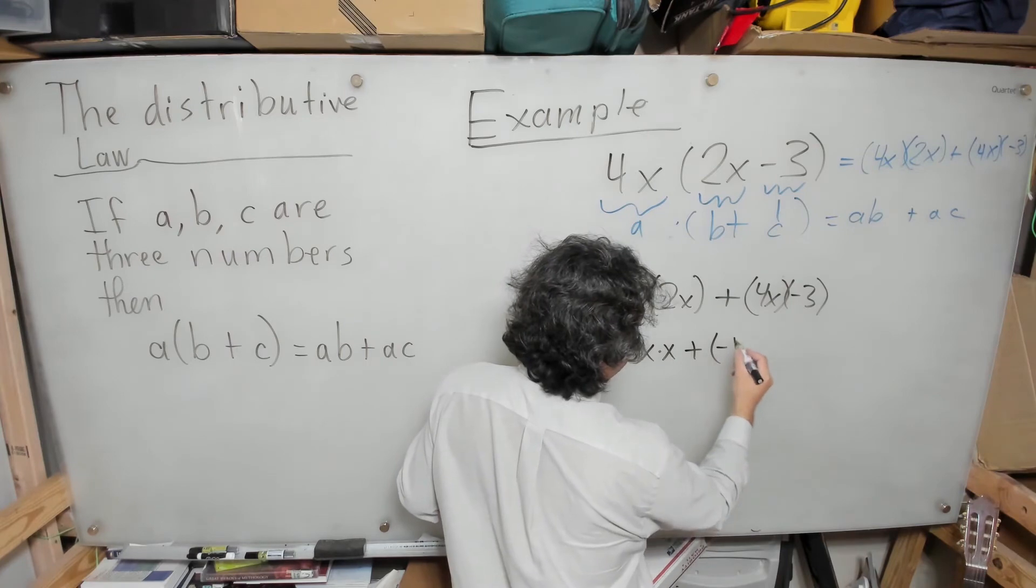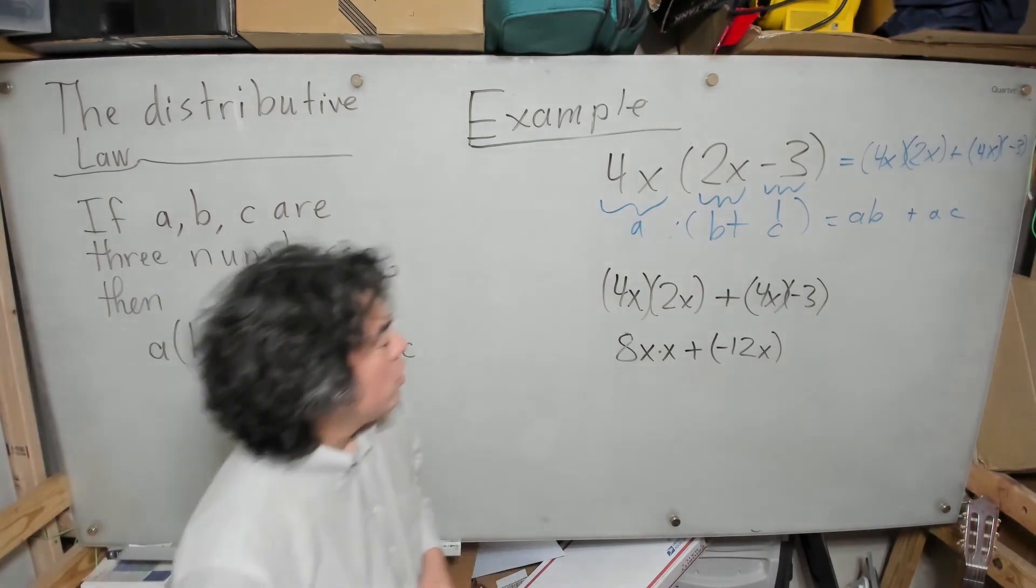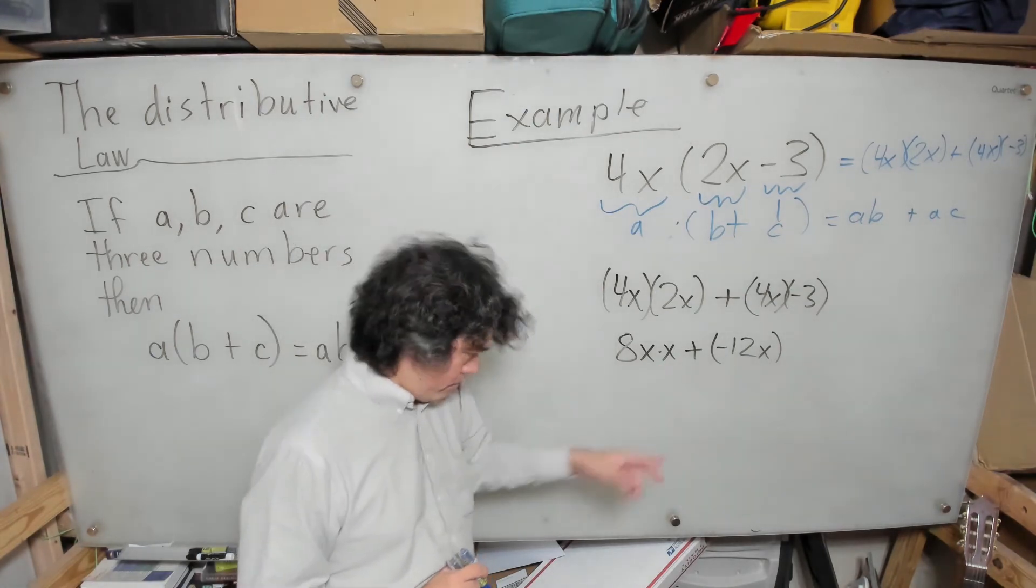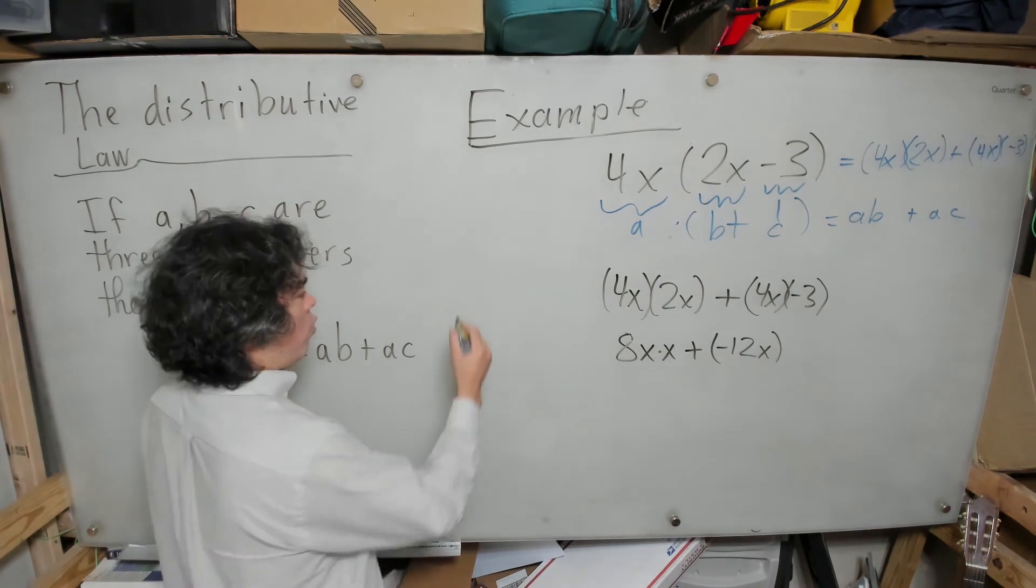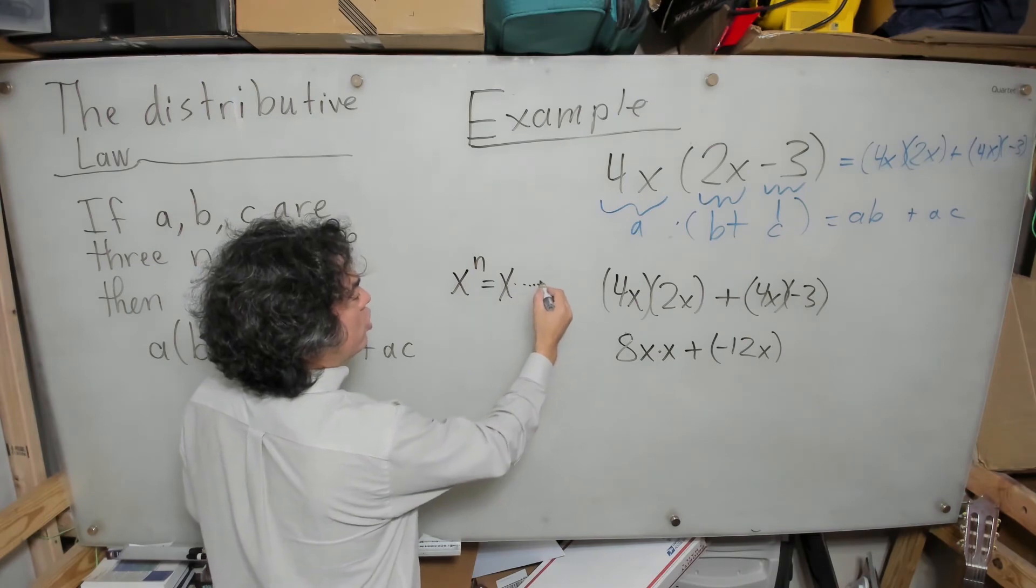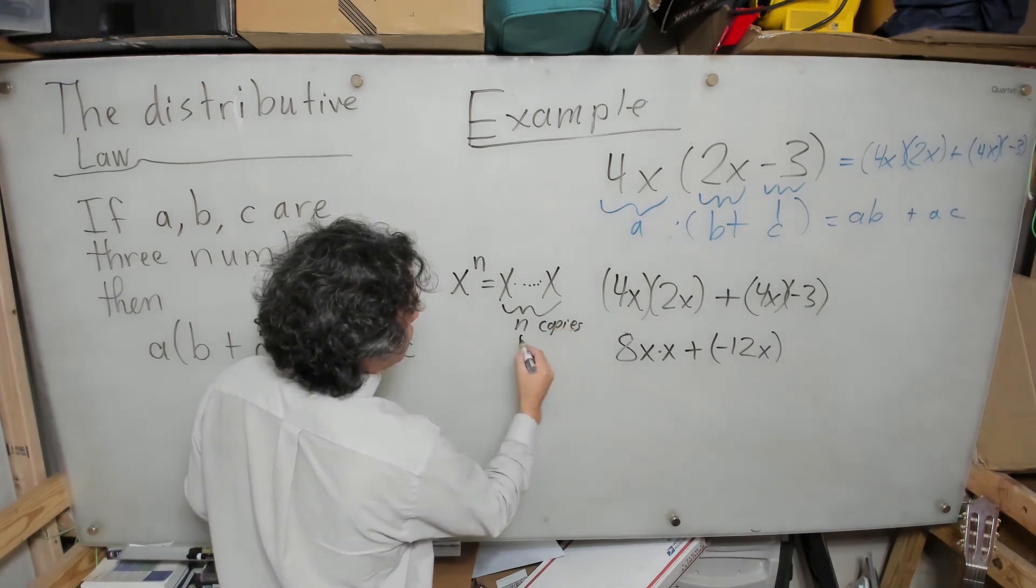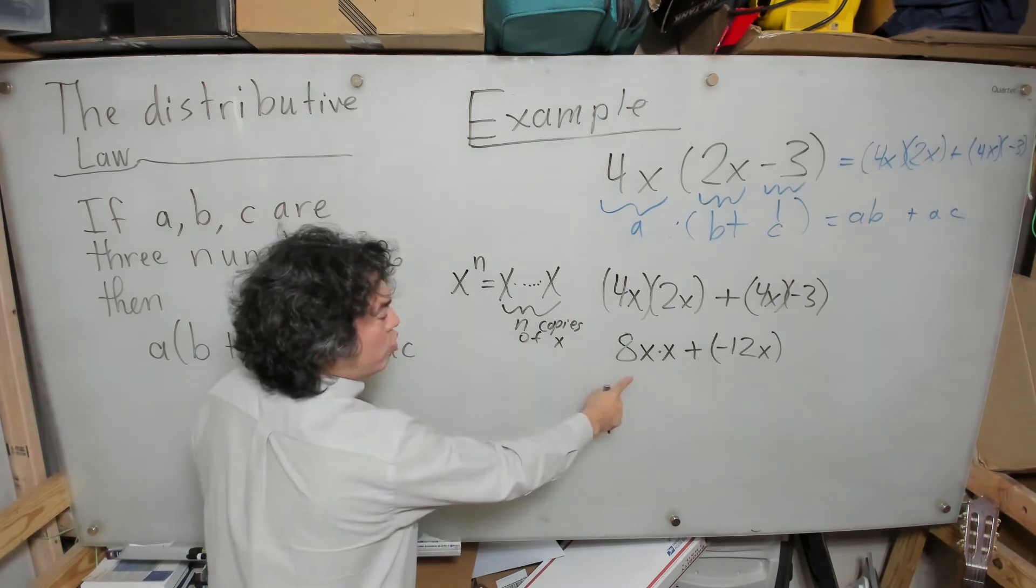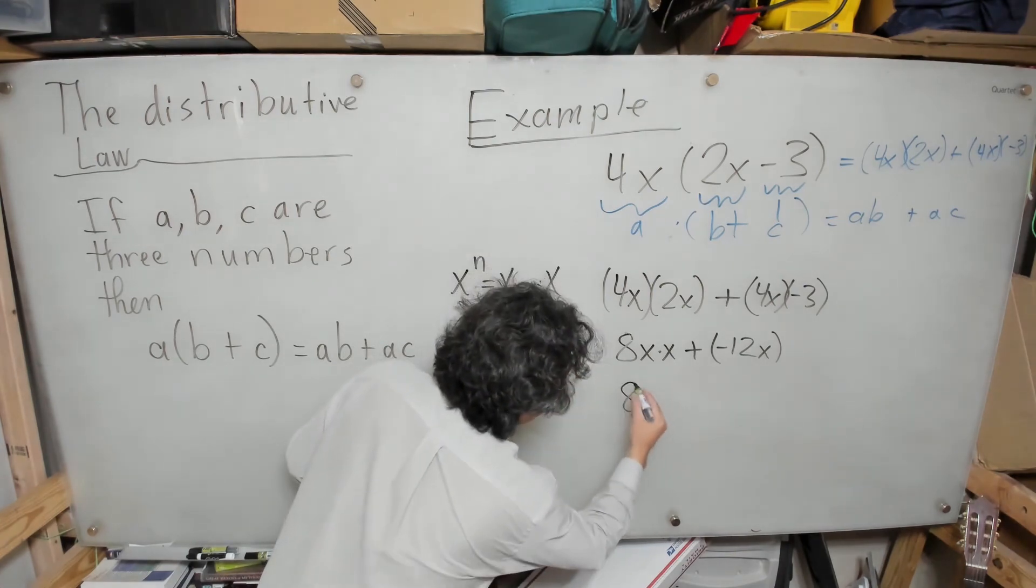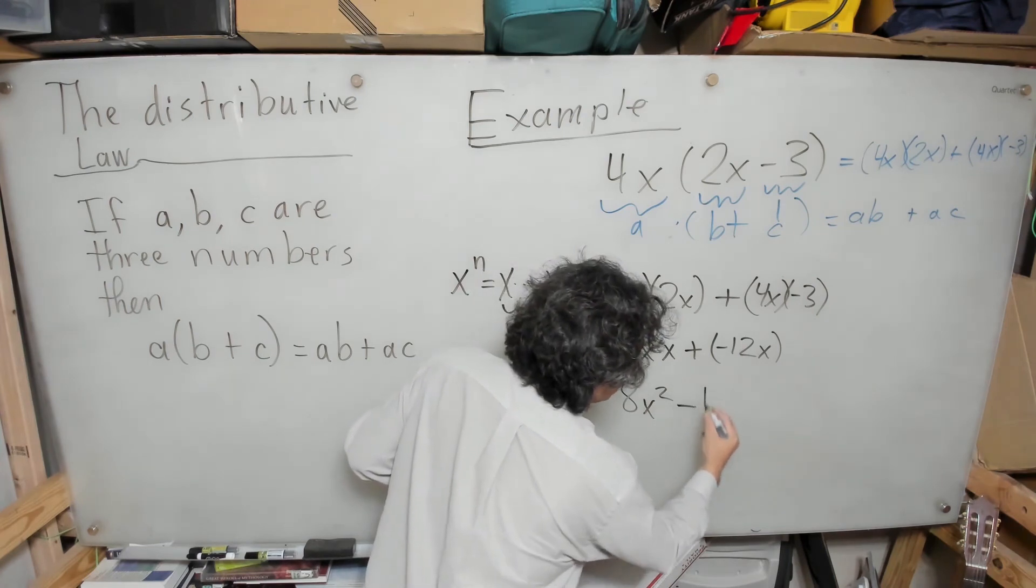Now I want to recall this notation: x times x. We remember that exponentiation means if I have x to the n, that means x times x times x—n copies of x being multiplied together. Here I have two copies, so my n would be 2, and what's been multiplied is x. So I can rewrite this as 8x squared, and then plus minus becomes minus 12x.